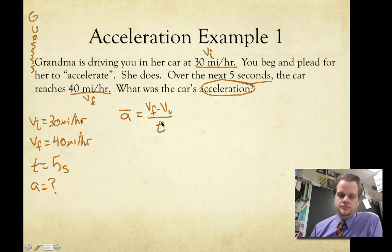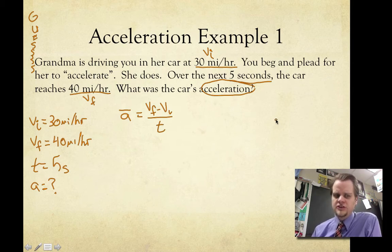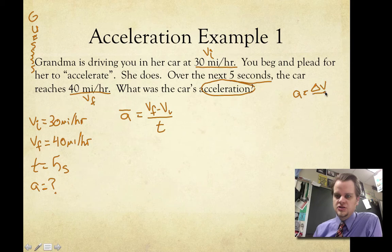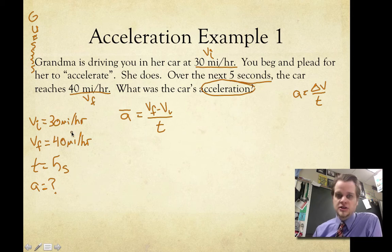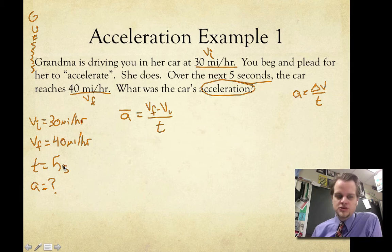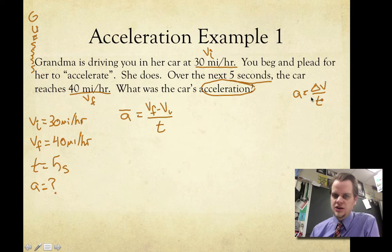Let's not forget that you can solve this conceptually, because all you're doing when you're finding acceleration is seeing how much the velocity changes over time. You went from 30 to 40 — that's a 10 mile an hour change — and you divide that by 5, because it took you 5 seconds to change. So you're thinking you'll probably get something like 10 divided by 5.